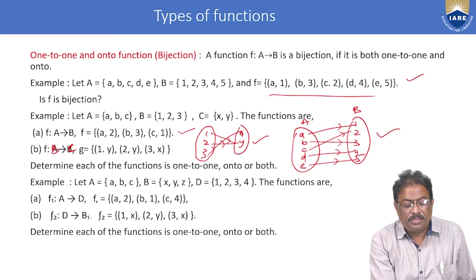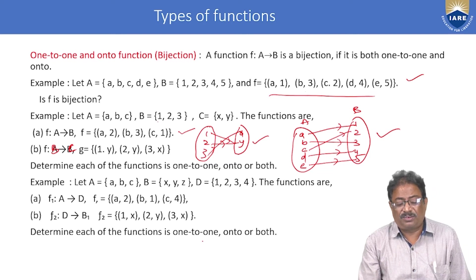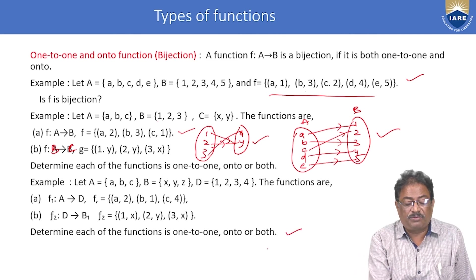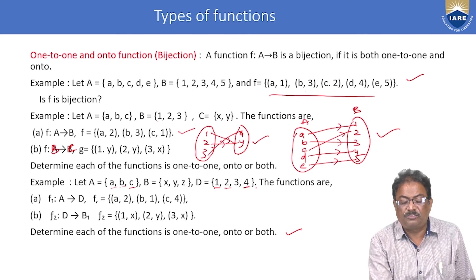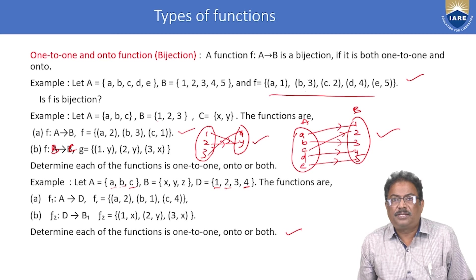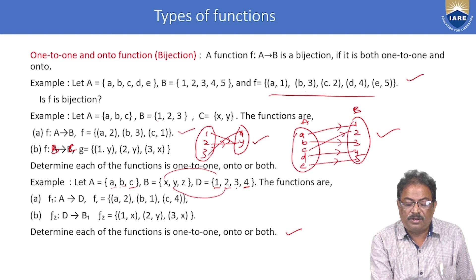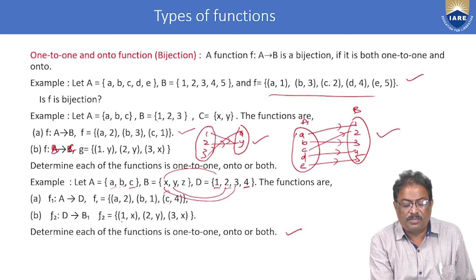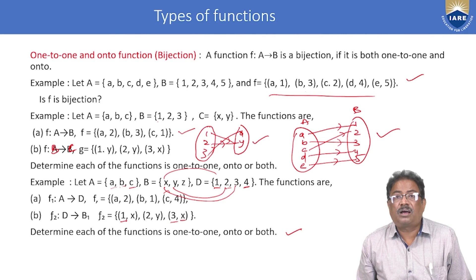Another example: determine whether functions are one-to-one or onto. For a mapping from A to D: a→2, b→1, c→4 — each element has a distinct image, so it is one-to-one, but not onto. For a mapping from D to B: 1→x, 2→y, 3→x — since 1 and 3 both map to x, it is not one-to-one and also not onto.